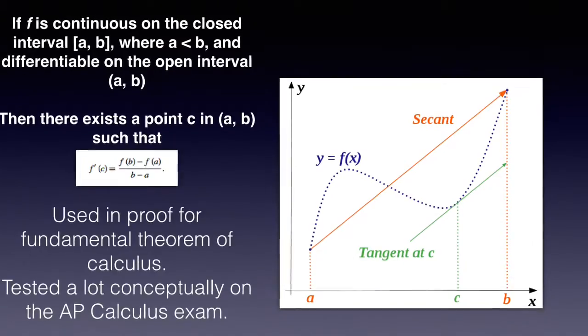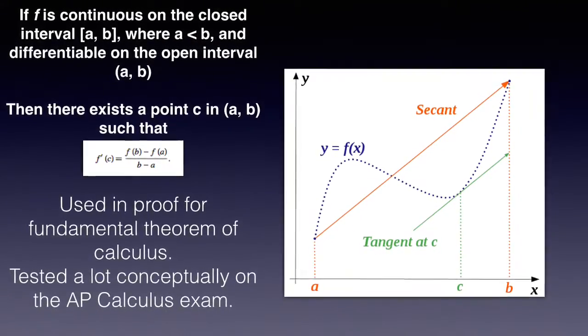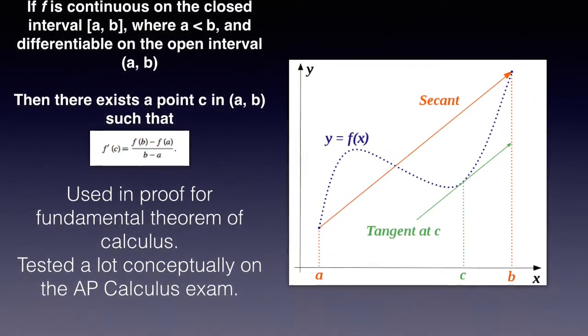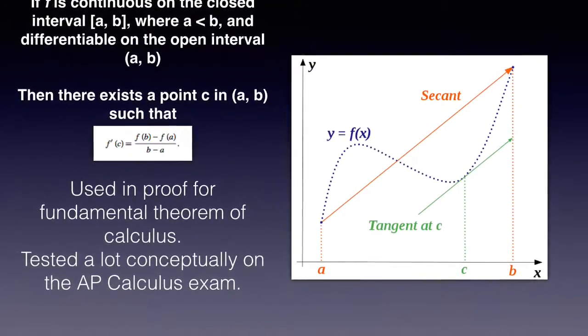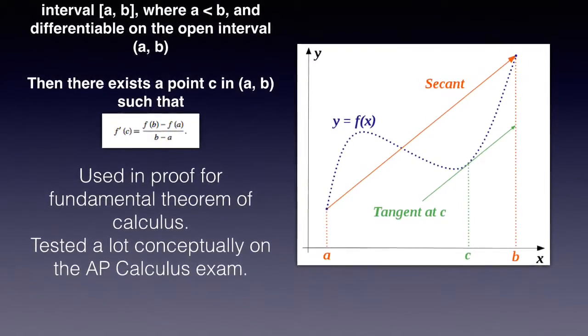If function f is continuous on the closed interval a to b, where a is less than b, and differentiable on the open interval a to b, then there exists a point c such that f prime of c equals f of b minus f of a over b minus a. This is used in the proof for the fundamental theorem of calculus.